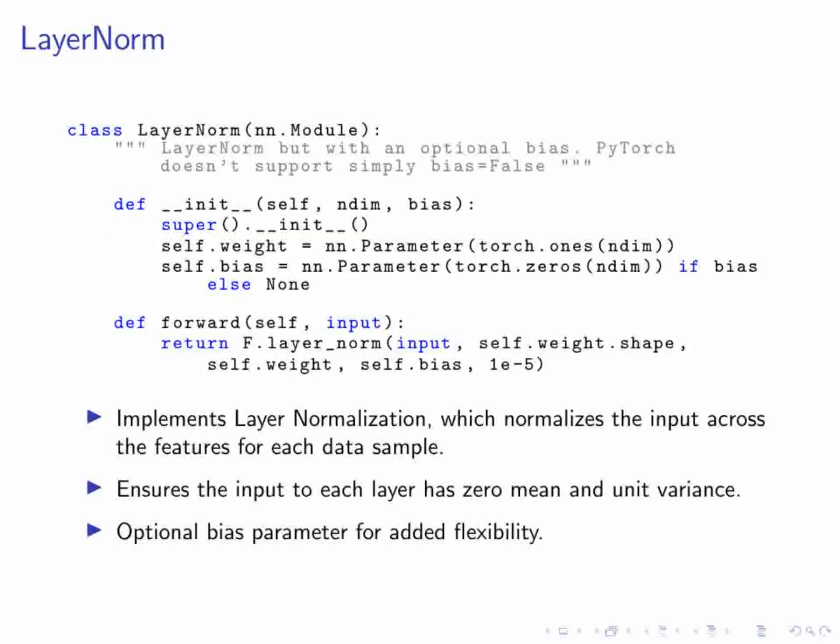Let's start with the LayerNorm class. This class is a custom implementation of layer normalization, which includes an optional bias parameter. PyTorch's default layer normalization doesn't support this bias option, so this custom implementation is quite handy. When we initialize the LayerNorm instance, we specify the number of dimensions, NDIM, and whether we want to include a bias. The weight parameter is initialized to 1s, which scales the normalized input, while the bias, if provided, is set to 0s.